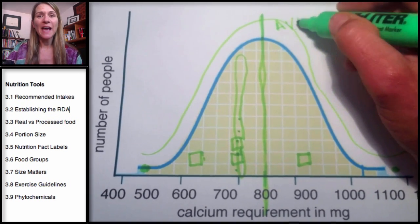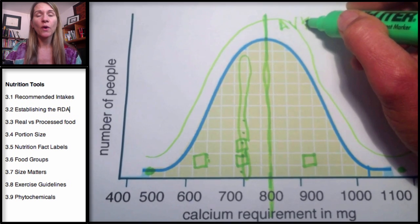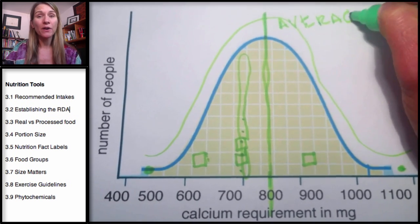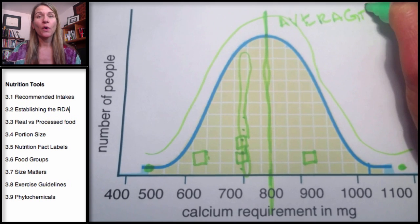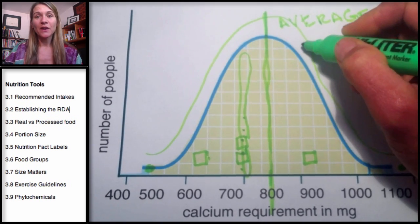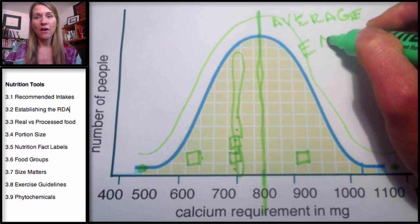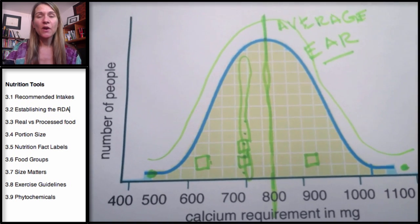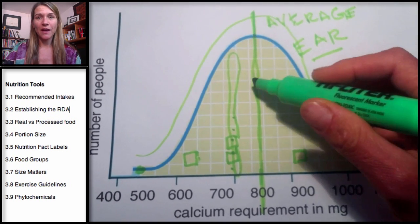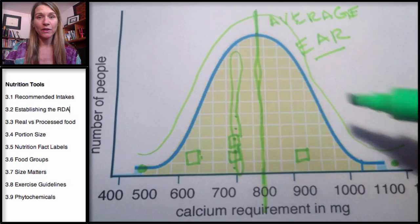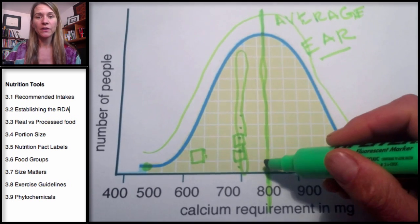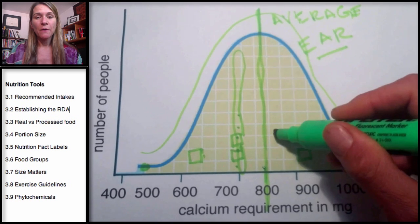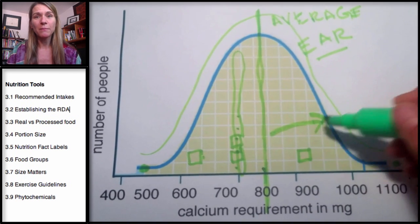This average amount based on the data and research is called the EAR — the Estimated Average Requirement for a population. And we don't want to set the recommendation at the average. Why? Because you're going to be missing a huge portion of people.